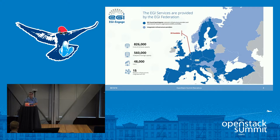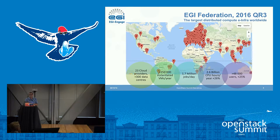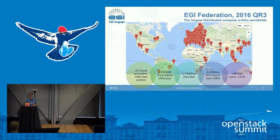The EGI Federation is, I think, the largest distributed compute infrastructure worldwide. We cover the whole of Europe but collaborate with international partners. We have more than 300 data centers, 23 of them are cloud providers. Last year we had more than 250,000 VMs running and 1.7 million jobs each day, which accounted for 2.6 billion CPU hours — a 26% increase over the previous year.